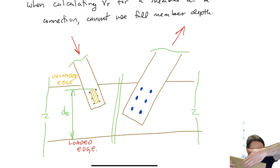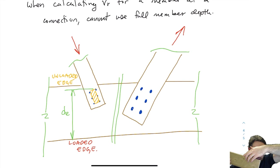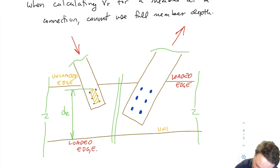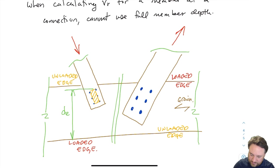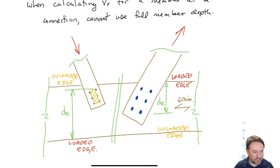For the case on the right, if I have a tension load — I'm pulling up on the member — the diagonal member bolted to the horizontal beam wants to pull toward the top edge. So now the top edge is my loaded edge and the bottom edge is my unloaded edge. My effective depth DE is from the loaded edge to the farthest bolt.